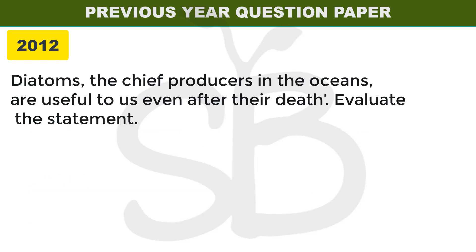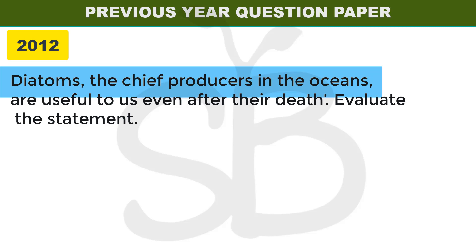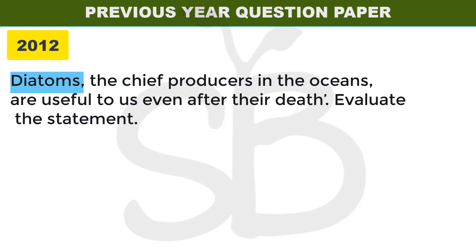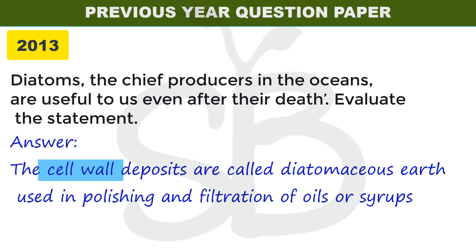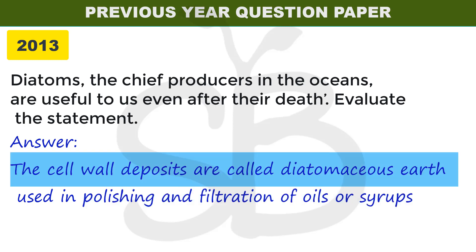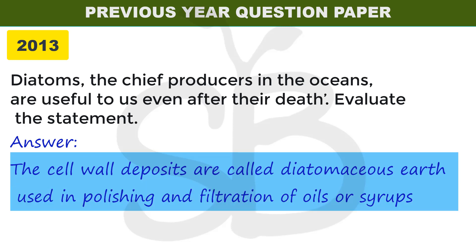Next question, 2012 annual exam: diatoms are the chief producers in the ocean and are useful even after their death. Evaluate this statement. The statement is correct. After death, the cell walls of diatoms form diatomaceous earth, which has economic value. It is used for polishing and filtration of oil and syrup.